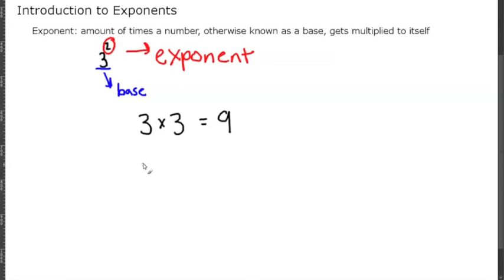Let's say we had 3 to the third. That would represent 3 times 3 times 3, which would be 27. 3 to the fourth would be 3 times 3 times 3 times 3, so 1, 2, 3, 4 times, which equals 81.